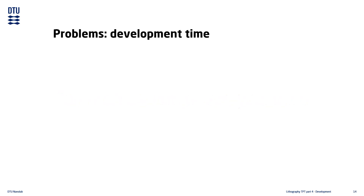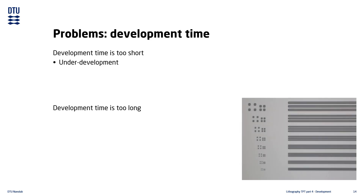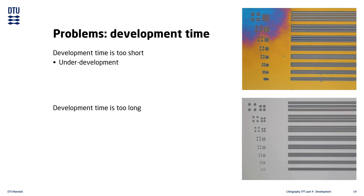An established process generally does not encounter a lot of development problems, but during the process development phase, it sometimes occurs that the development time is either too short or too long. When the development time is too short, we say that the resist is underdeveloped. If we compare an image of a perfectly developed resist with an image of an underdeveloped resist, it is quite obvious that something is wrong. The resist film is not fully removed in the exposed areas, leaving behind a thin resist film where there should be none. This is almost always displayed in a quite colorful manner, where orange and blue colors are residual resist film which should have been removed.